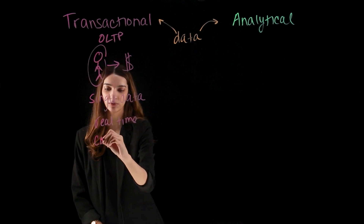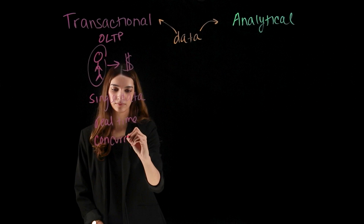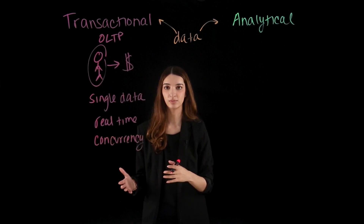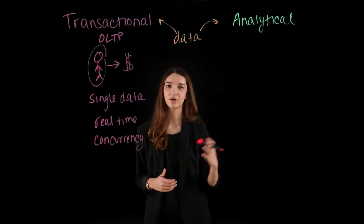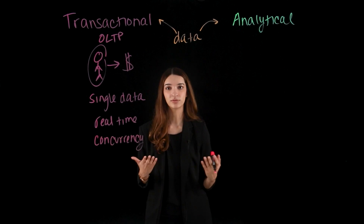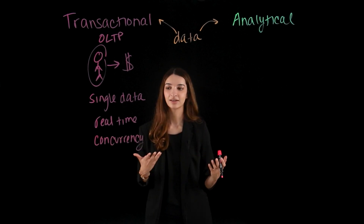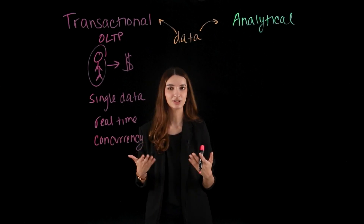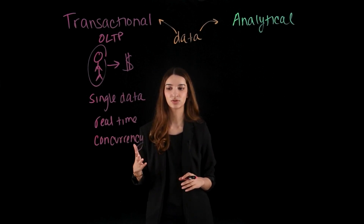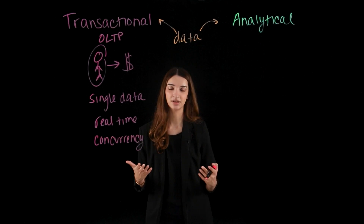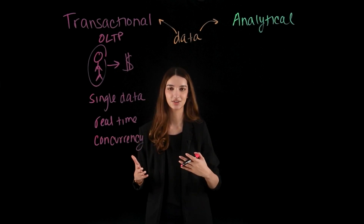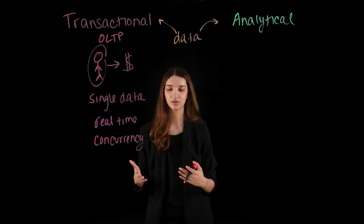We also want to make sure that we're supporting concurrency — the ability for multiple users to access the database at the same time. Imagine you are at a store checking out and there's only one register open. That isn't very efficient. It's important to make sure that multiple users are able to access the database and we're not waiting for each person to process their transaction before the next transaction goes through.